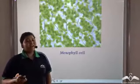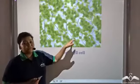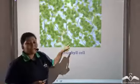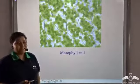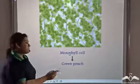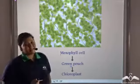This is a transverse section of a leaf. These cells that you can see are known as mesophyll cells, and these mesophyll cells have green pouch-like structures which are known as chloroplasts.